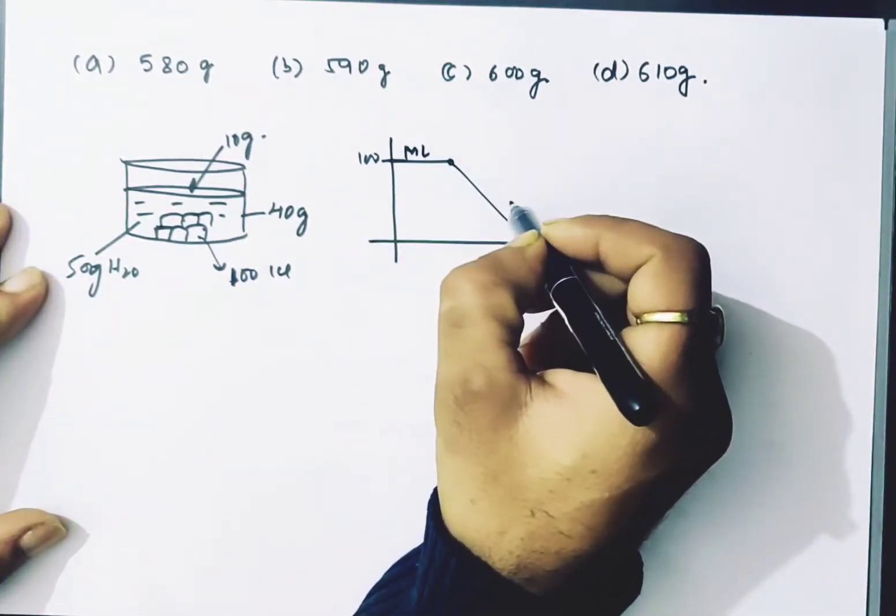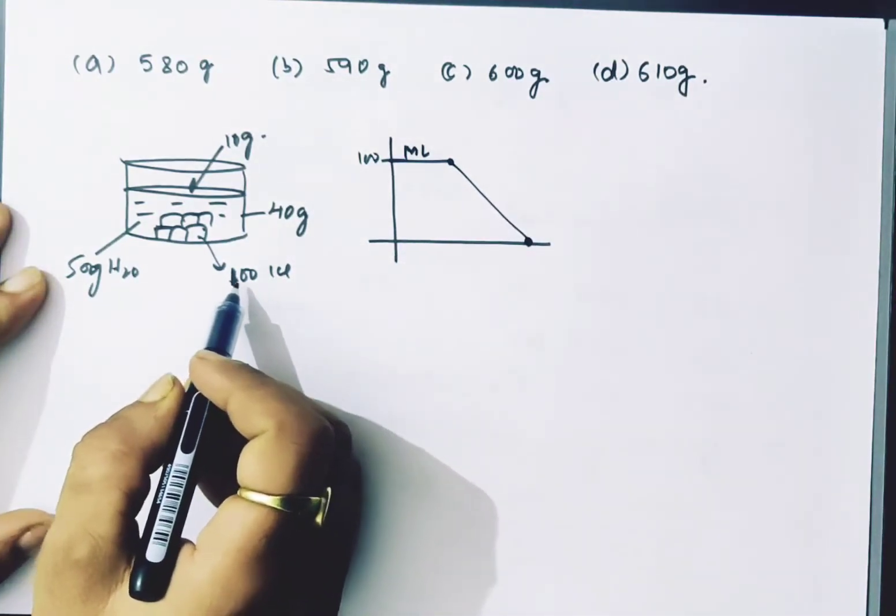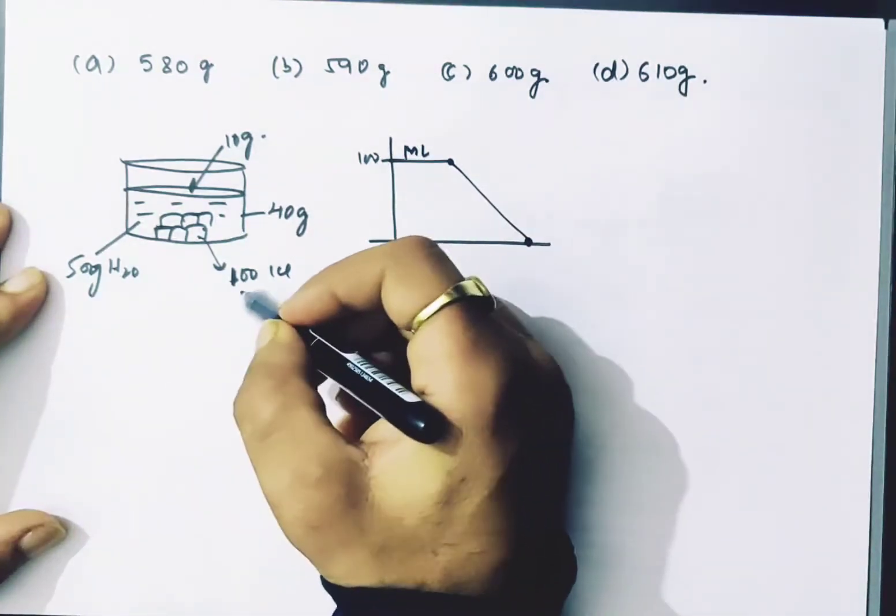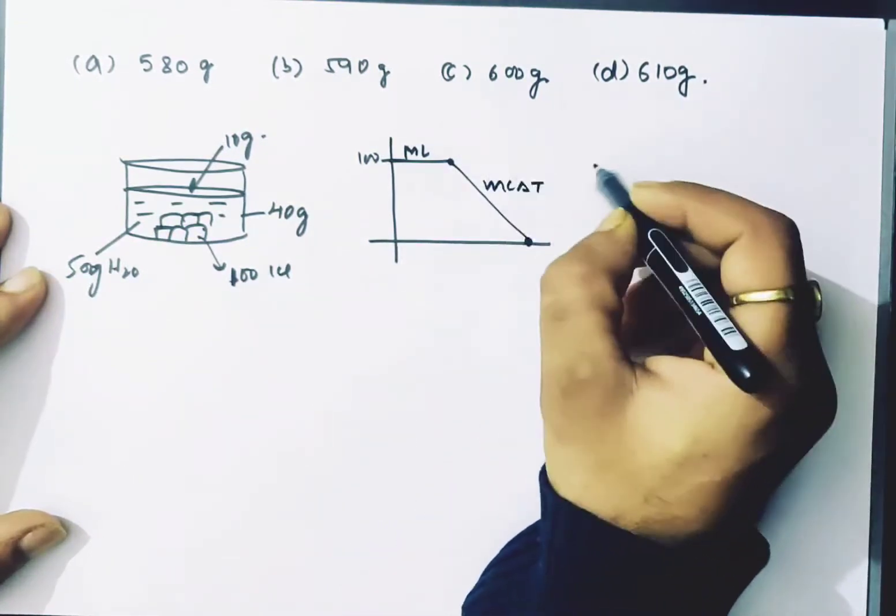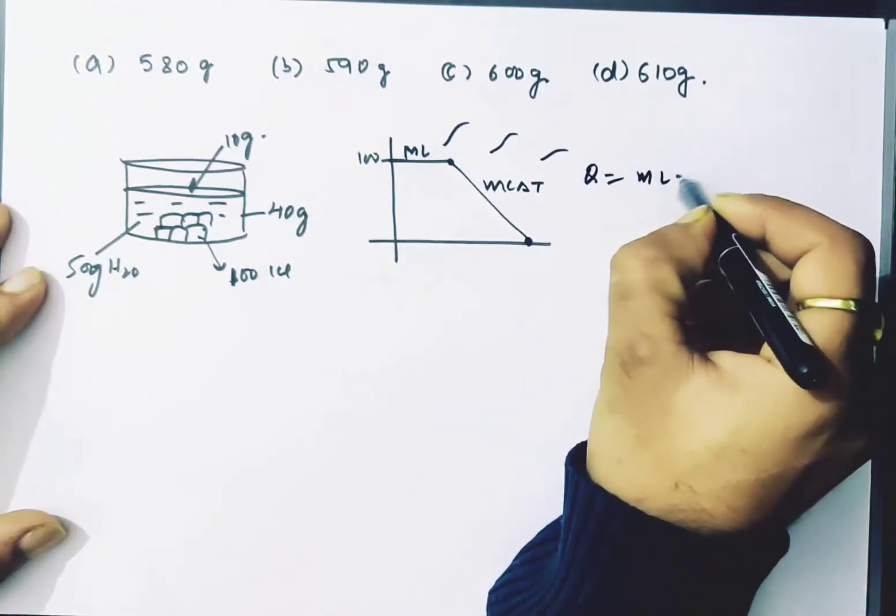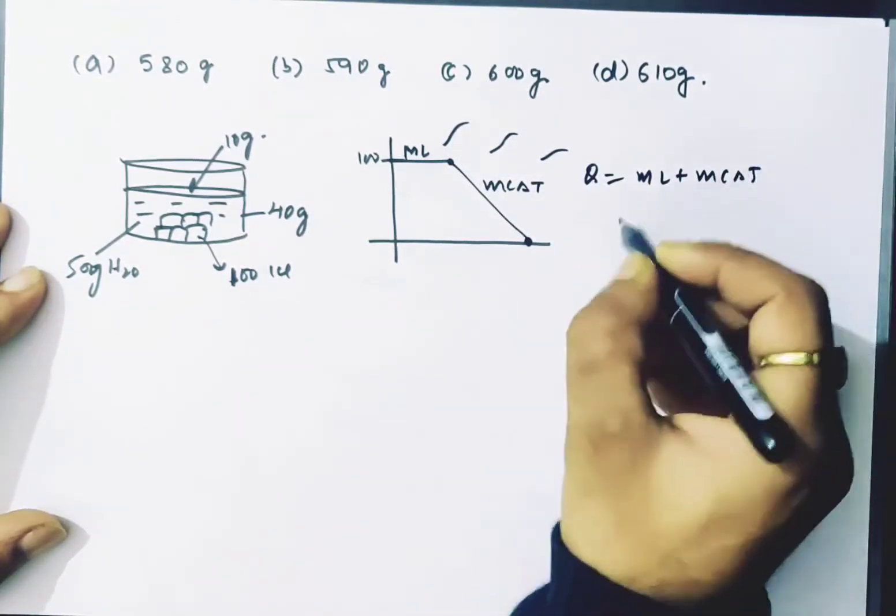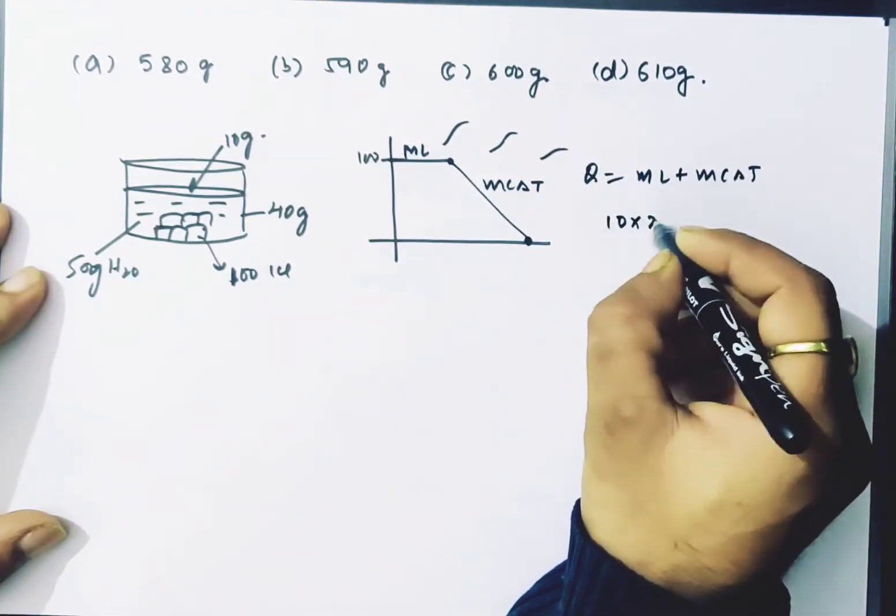So let me see how much heat has been liberated. Q will be mL plus mc delta T. It is 10 grams and L is 540.